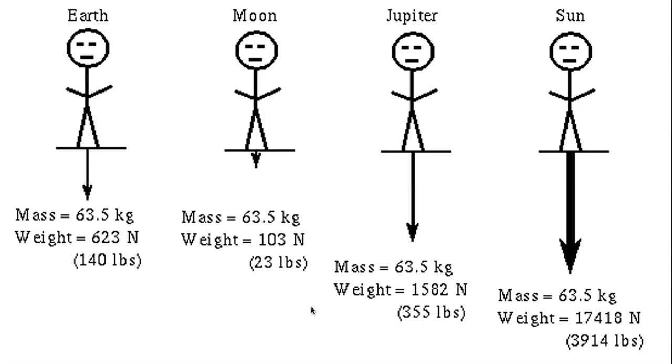On Earth, that man is 140 pounds. On the Moon, he only experiences 23 pounds, 355 pounds on Jupiter, and almost 4,000 pounds on the Sun. The Sun has extremely high gravity. That's just the difference simplified between mass and weight.